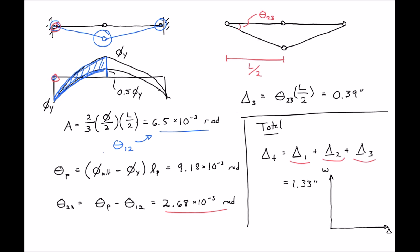Our total deflection is equal to delta 1 (elastic deformation) plus delta 2 (additional deflection to form the mechanism) plus delta 3 (additional plastic rotation), giving a total of 1.33 inches. If we plot load versus deflection, we'd see an initial elastic deformation up to point 1 (first yield), then additional capacity until we reach our mechanism at point 2, and then plastic deformation with no additional load up to point 3 when we finally crush our plastic hinge.